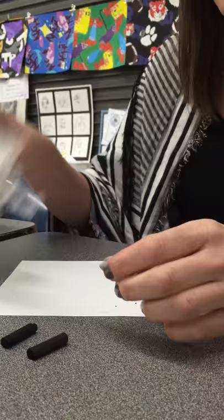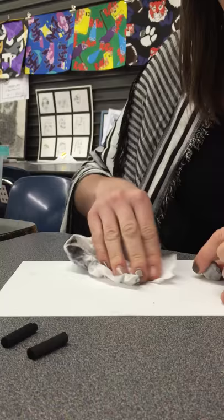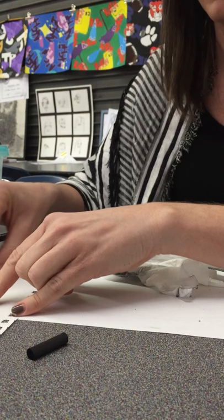So the first thing you need to do is take your charcoal on your scrap piece of paper. Can you see it? Okay, and you rub it all over the scrap piece.